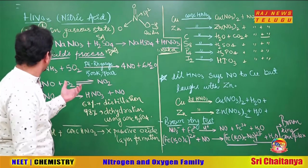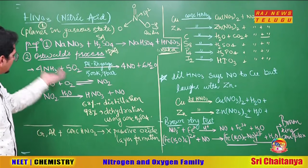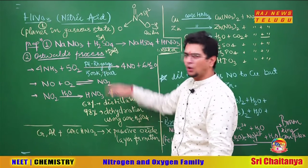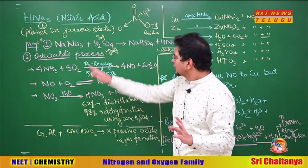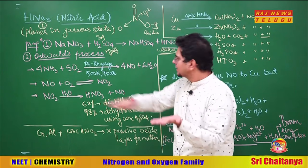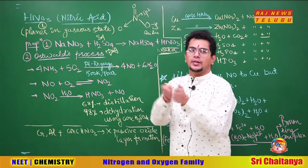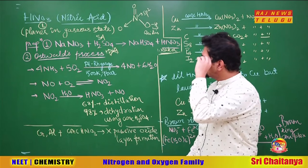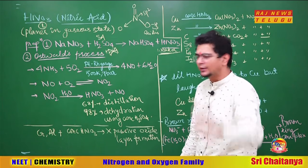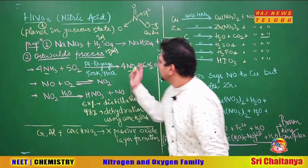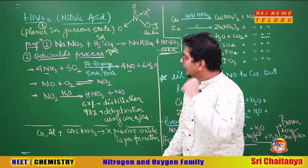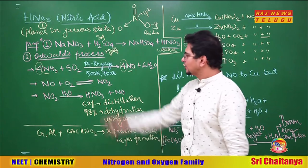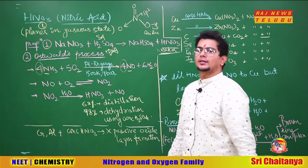Ostwald's process: ammonia is taken with oxygen in the presence of a platinum-rhodium gauge catalyst — a direct exam question. It provides the surface for NH3 and O2 to come and react. At 500 Kelvin, 9 bar pressure, what is formed? NO and 6H2O. To remember the stoichiometry, note that nitrogen is conserved between NH3 and NO: if we have 4 nitrogen atoms here, 4 nitrogen atoms appear in the product. So 4NH3 gives 4NO directly.